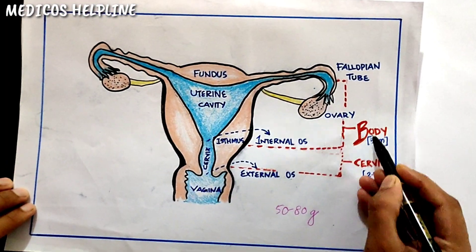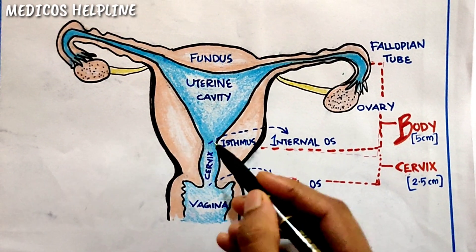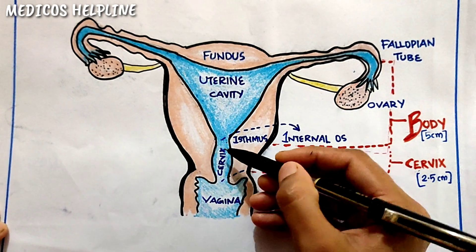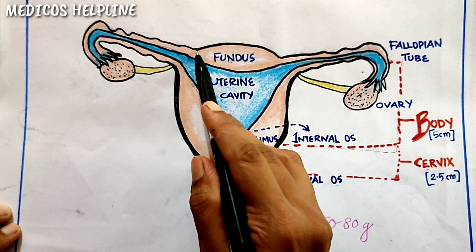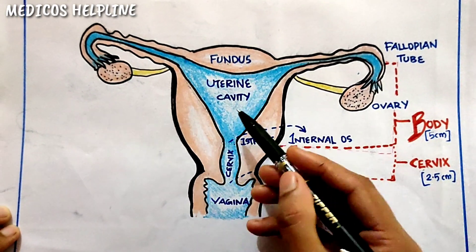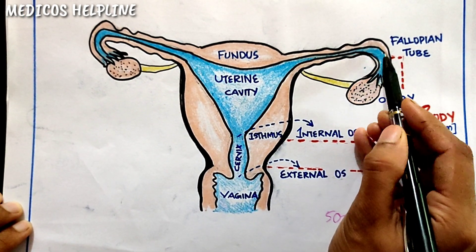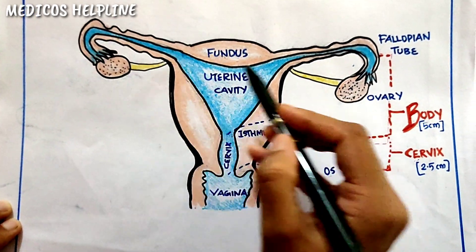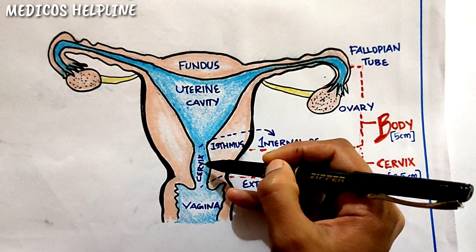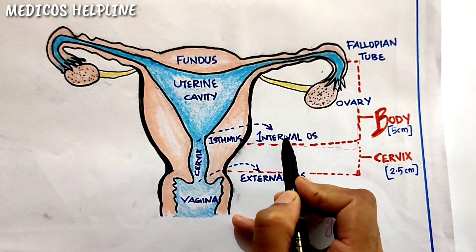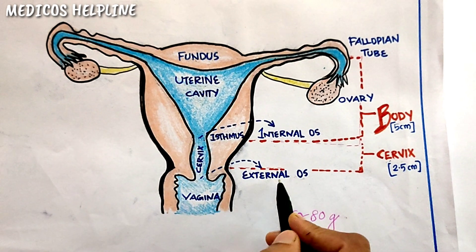The uterus has three parts: the body, the isthmus, and the cervix. The upper part is called the body and the lower part is called the cervix. The body contains the fundus — the dome-shaped upper part — the uterine cavity, and the uterine walls. The uterine cavity is connected to the fallopian tubes on either side, which are in turn connected to the ovaries. The uterine cavity opens into the cervix at the junction of the isthmus through the internal os, and the cervix opens into the vagina through the external os.